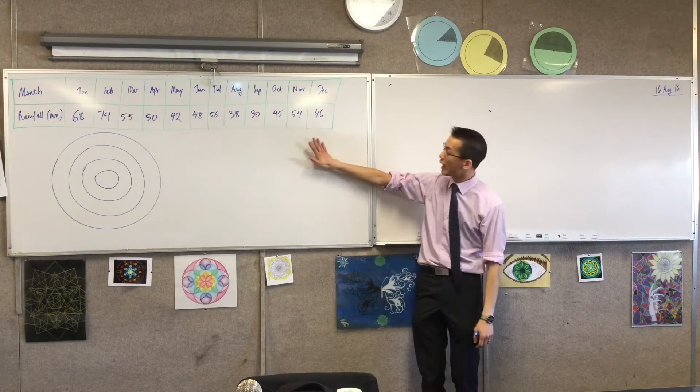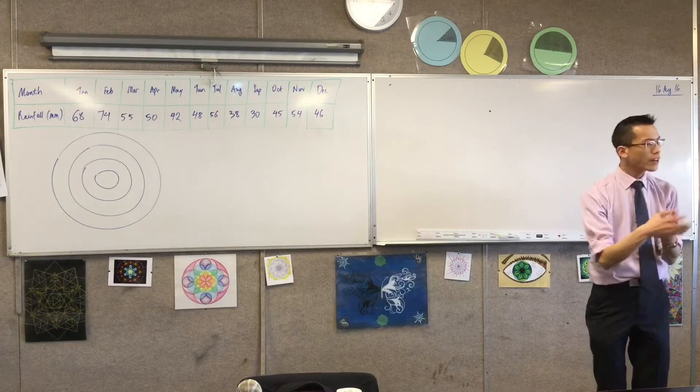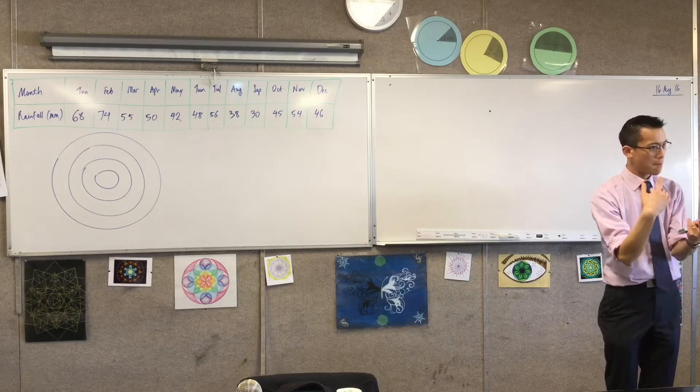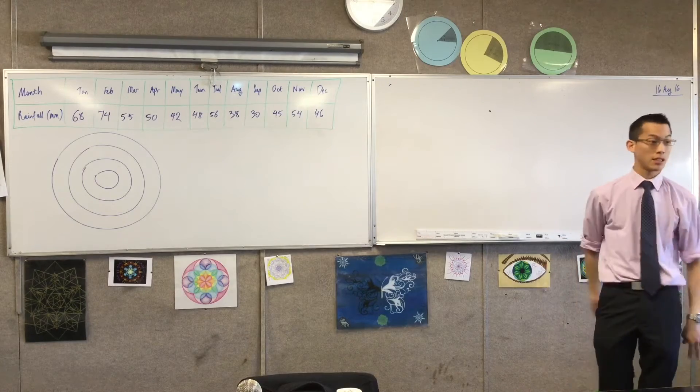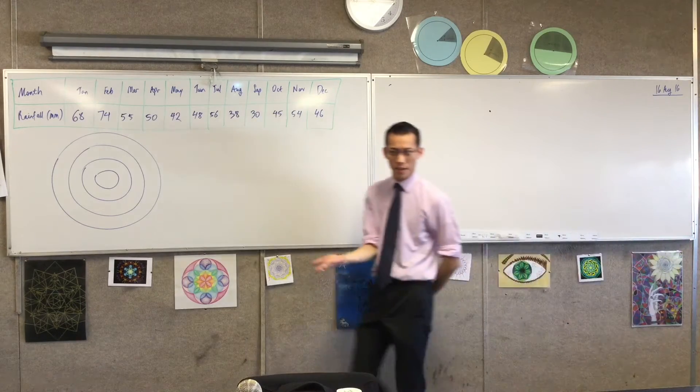When you have a look at this data, we've looked at bar charts and we've looked at line graphs this morning. Out of those two, if you had to choose one of those, which would be a better choice, do you think, for this particular data? Line. I'd probably go with a line graph. Why might that be the choice that we make?